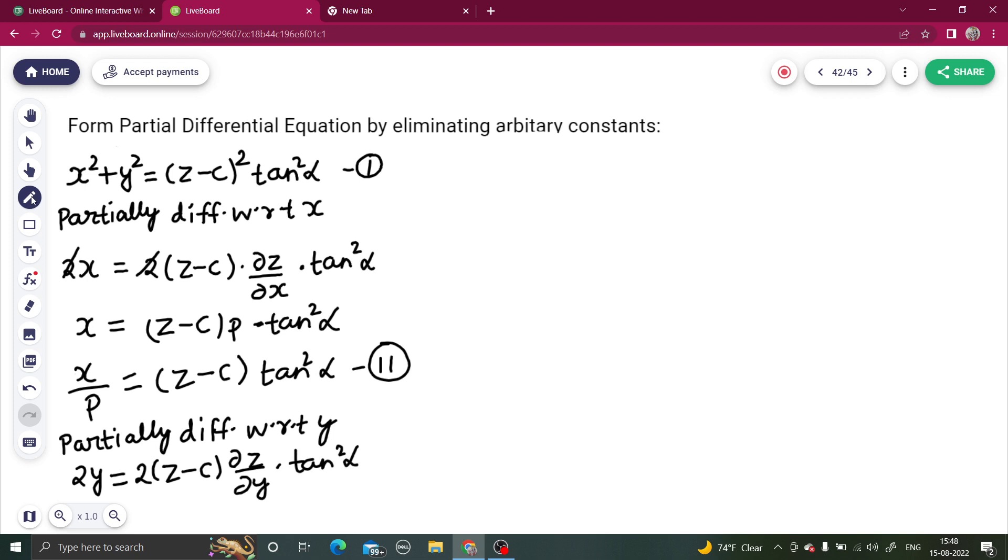2 I can again cancel. We are getting y equals to z minus c del z by del y 10 square alpha. I again cancel. We are getting y by q to be equal to z minus c 10 square alpha.